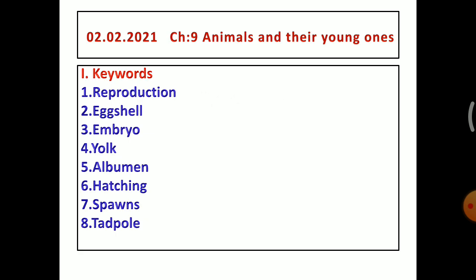Then open your notebook and write the date 02.02.2021. Then write title of the chapter, chapter number 9, animals and their young ones. Then write Roman letter 1, keywords.